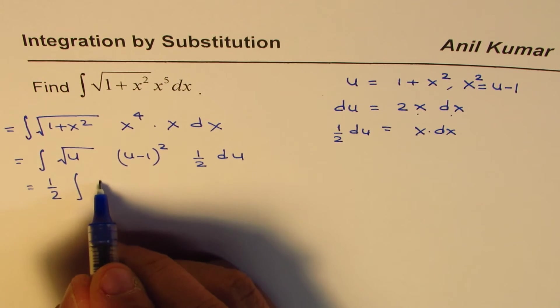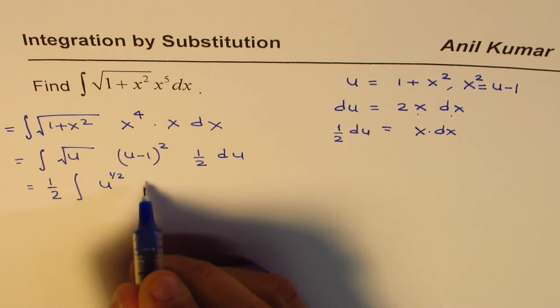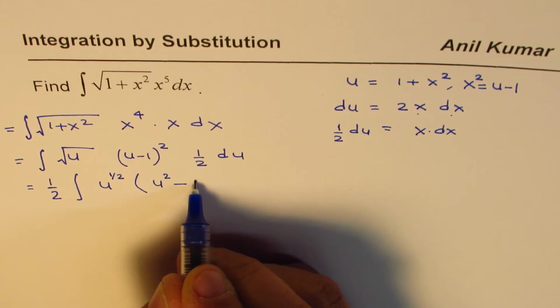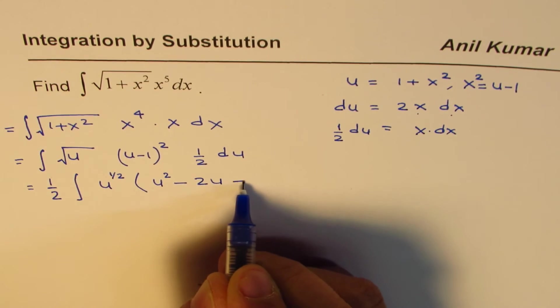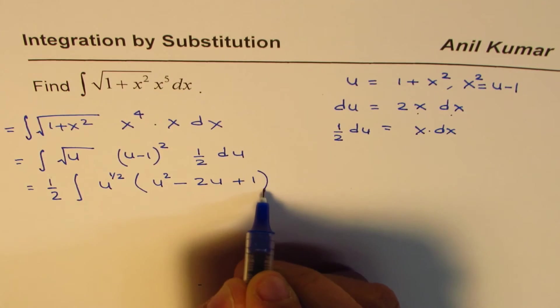Let's write u to the power of half times, and expand this: we get u squared minus 2u plus 1 du.